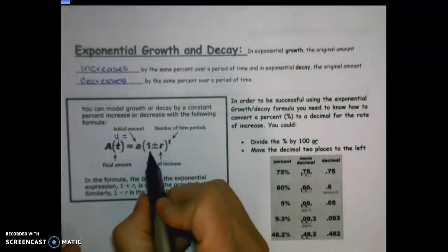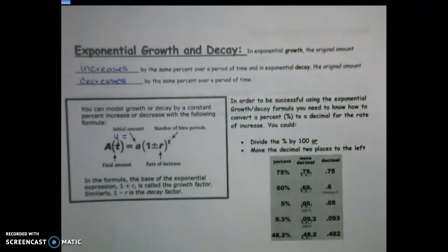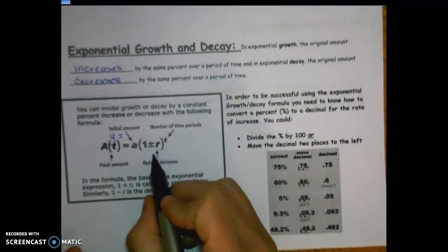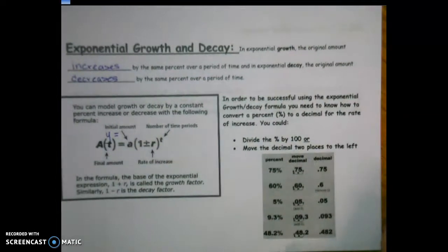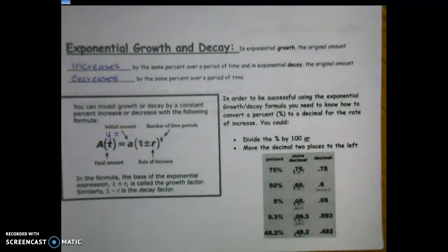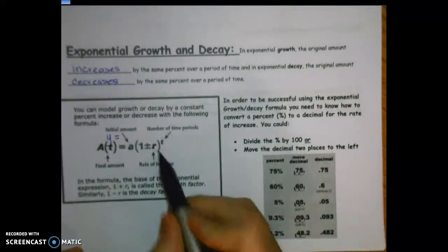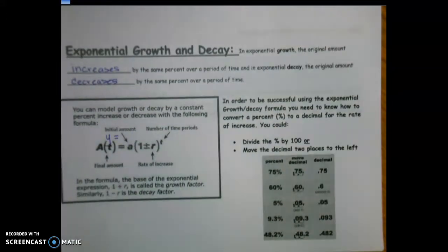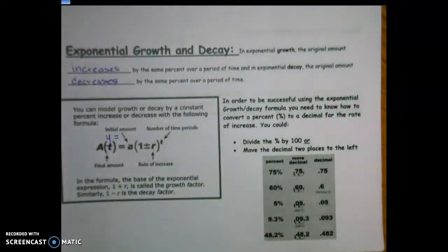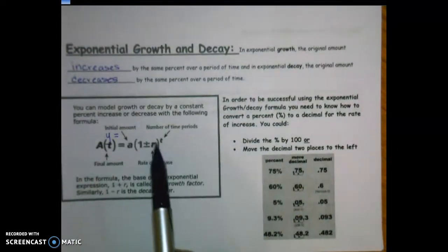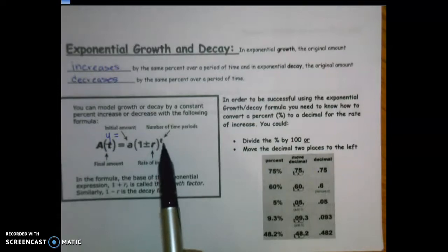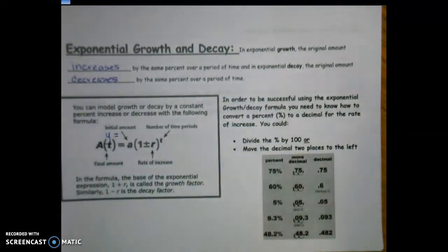Inside the parentheses, 1 represents 100% of the original amount, and then either plus or minus. You'll decide whether to use a plus or minus based on whether it's a growth question — use a plus — or a decay question — use a minus. R represents the rate of increase or decrease, always written as a decimal. They'll usually give it as a percent and you have to convert it. T is the exponent, representing the amount of time, which makes this an exponential function.